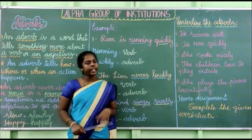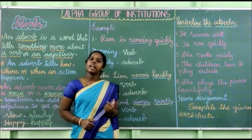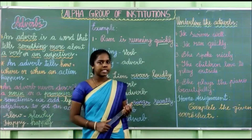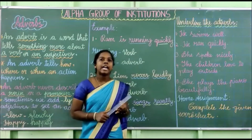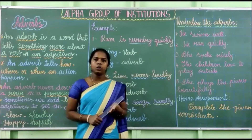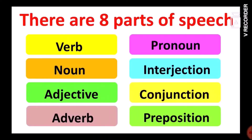You have to give respect to your elders. Children, now may you recap the parts of speech? Noun, verb, adjective, and pronoun once again. Children, there are 8 parts of speech. In the previous class, we have already discussed about verb, noun, adjective, and pronoun.